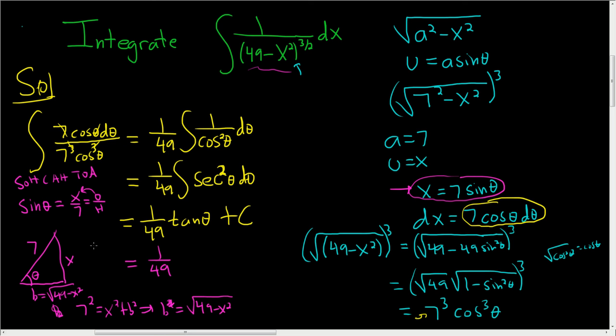And now using SOHCAHTOA, so opposite over adjacent. So x over the square root of 49 minus x squared. And let's not forget the plus c. And that is the final answer.